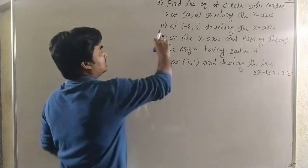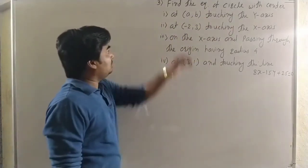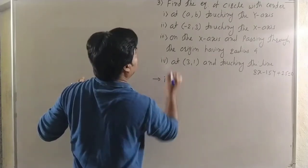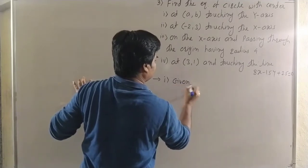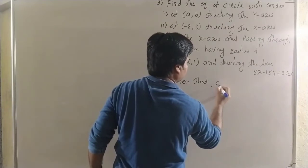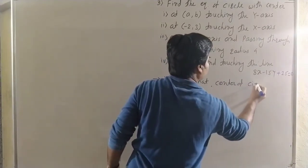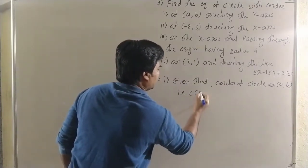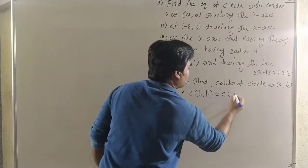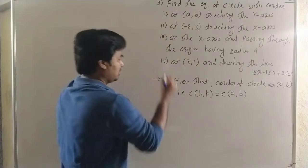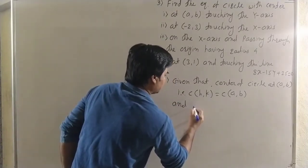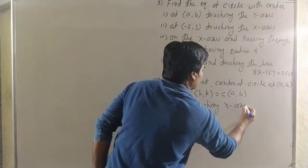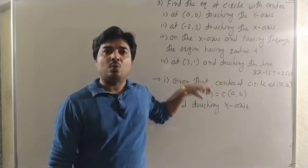Here is the first example in Exercise 6.1: find the equation of circle with center (a, b) and touching the y-axis. Here the center is given but the radius is not given. Given that center of circle is at (a, b), and the circle is touching the y-axis, that means the y-axis is a tangent to the circle.